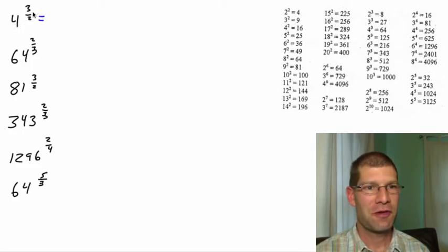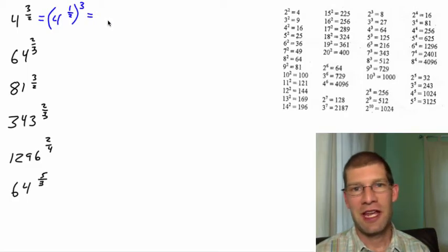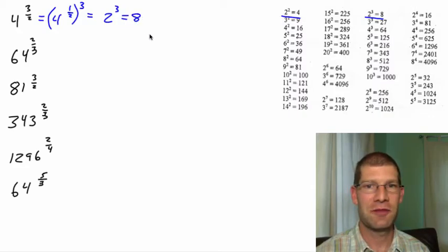So if you have 4 to the 3 halves, you could look at it as 4 to the 1 half, take care of the root first, then that to the third. That's saying what squared is 4. That's 2, because 2 squared is 4. Now we have 2 to the third. So we jump over to our third power column, and 2 to the third is 8. So that one there is going to be 8.